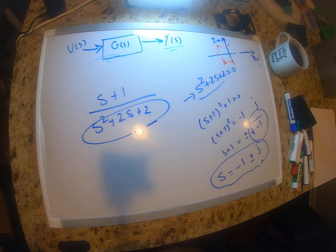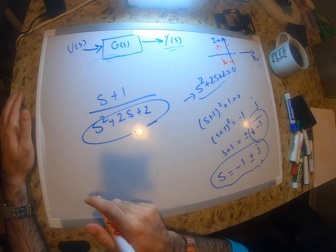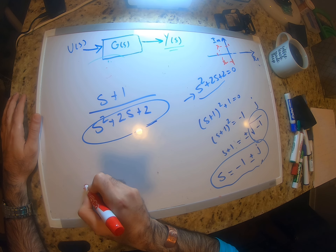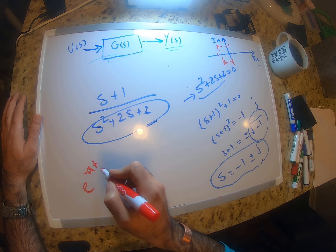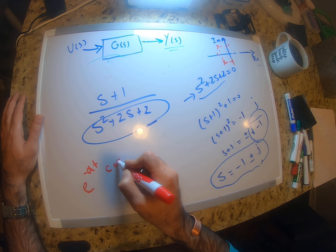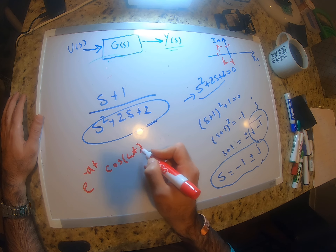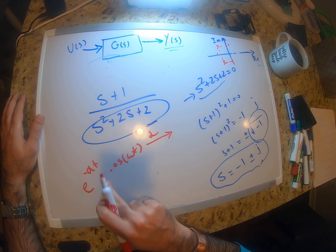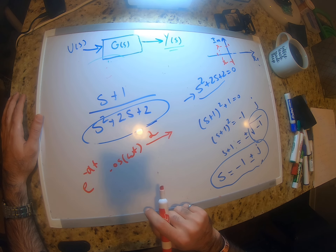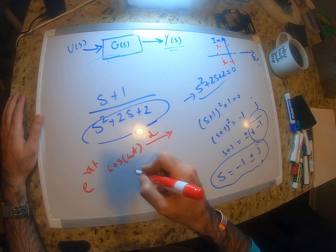We can use the Laplace transform table to verify this. When you have complex poles of this form, looking up the corresponding entry in the Laplace transform table gives the time-domain result for the system response.